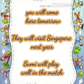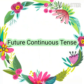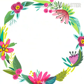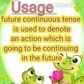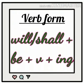These are a few examples to denote simple future tense. The next tense is future continuous tense. Future continuous tense is used to denote an action which is going to be continuing in the future for a while. The verb form for future continuous tense is will or shall plus be plus verb plus ing.